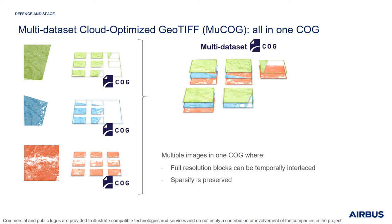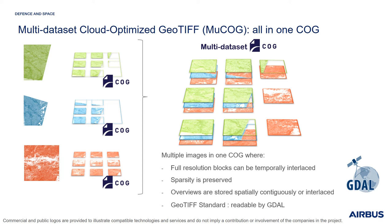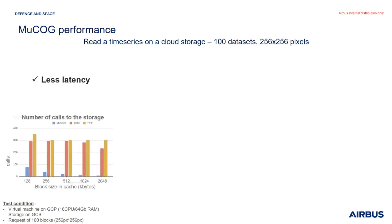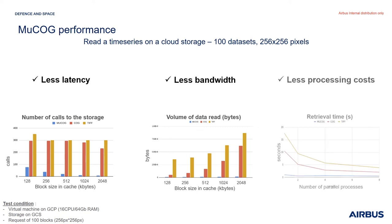As in the COG, this interlacing preserves sparsity. Overviews can be stored spatially, continuously, or interlaced, depending on the use case. This MUCOG respects the GeoTIFF standard, which makes it readable by GDAL. The MUCOG is not mandatory, but it gives very good performance when reading a time series on cloud storage. The MUCOG minimizes latency by drastically decreasing the number of calls to the storage — shown in blue in the graphic — and reduces bandwidth usage by decreasing the volume of data read, resulting in a reduction of cost with lower computing requirements.